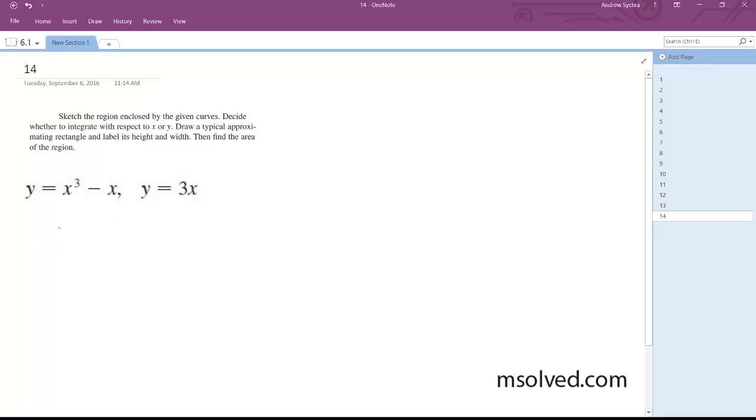The first point to do is to set these equal to each other so we can find the intersection points. x cubed minus x is equal to 3x, and we end up with here,